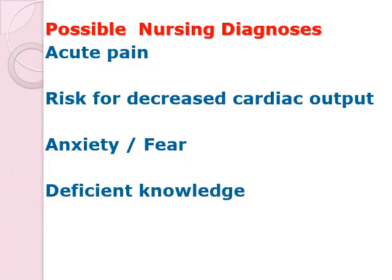Possible nursing diagnoses include acute pain. If the patient is having acute pain or chest pain, nursing interventions include stopping all activities that can stress the client, placing the client in semi-Fowler's position to increase oxygen supply through lung expansion, reducing myocardial workload, measuring vital signs, starting oxygen at 2 liters per minute, and giving nitroglycerin if there is a PRN order — as long as there is no hypotension.